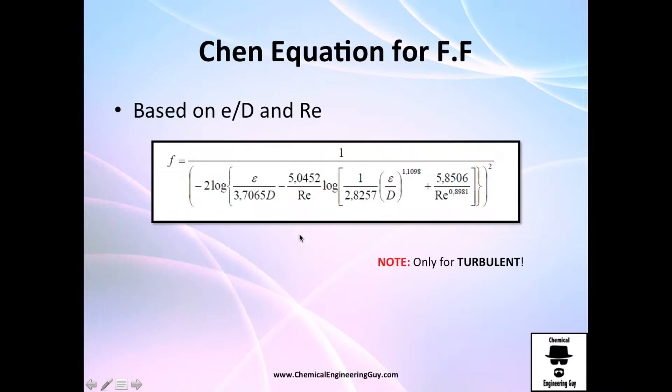As you can see, there's only this parameter Reynolds and this parameter epsilon over D, and the Reynolds. So it depends only on relative roughness and Reynolds number, which is the same for the diagram. We can say we have Reynolds number and we have the relative roughness.